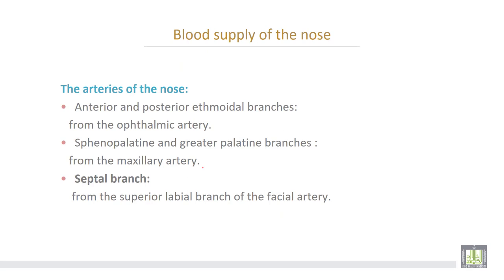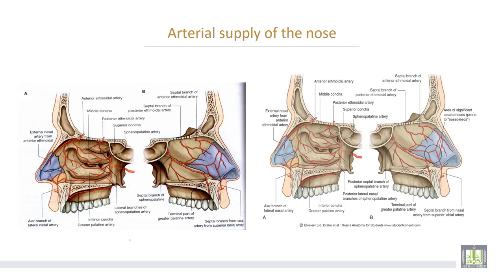The blood supply of the nose — arteries of the nose: number one, anterior and posterior ethmoidal branches arise from the ophthalmic artery of the internal carotid. Then, sphenopalatine and the greater palatine branches from the maxillary artery of the external carotid. Then, septal branches from the superior labial branch of the facial artery, also arising from the external carotid artery.